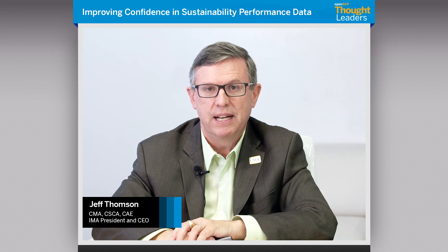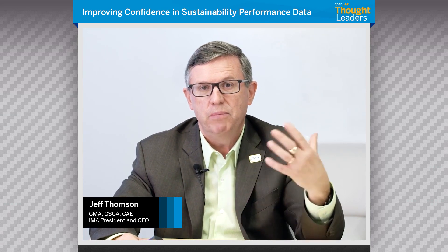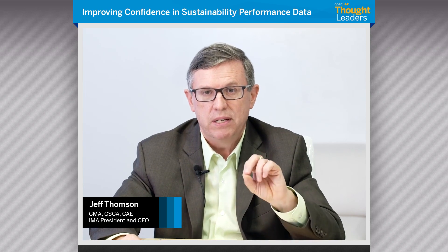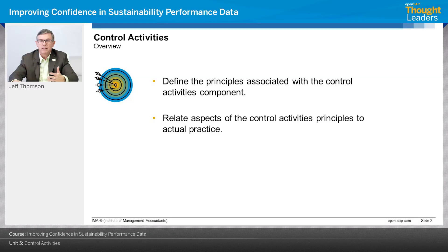Hi, I'm Jeff Thompson, President and CEO of IMA, the Institute of Management Accountants. Welcome to Unit 5, Control Activities, in the course Improving Confidence in Sustainability Information. In Unit 4, we covered Risk Assessment — identifying risks to achieving sustainability or financial objectives. Here in Unit 5, we identify control activities that manage risk to an acceptable level, and we'll define the principles and explore them through case studies.